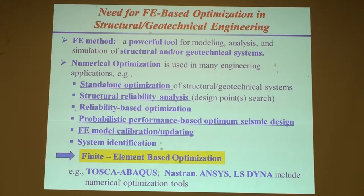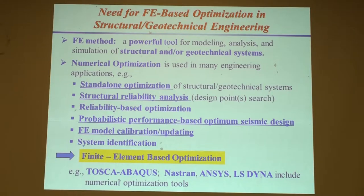Merging FEA with optimization has been done a long time ago. There are a number of famous examples: the optimization software Tosca was integrated with Abaqus, mainly to solve mechanical engineering problems — minimizing the weight of mechanical components of automotive or aerospace structures. Then Nastran, ANSYS, and LS-DYNA have computational optimization tools, but mainly also to optimize mechanical components, not so much civil structures.